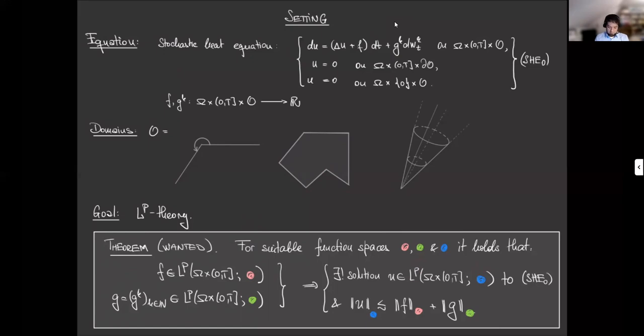And I also want to have an estimate of this type where I can estimate the corresponding norm of the solution by a constant times the sum of the norms of the individual forcing terms in the deterministic and in the stochastic part.